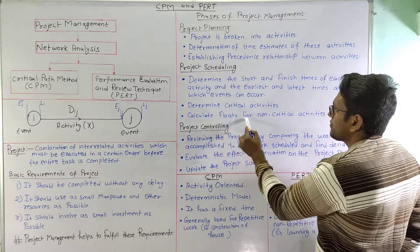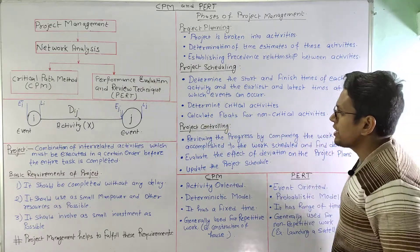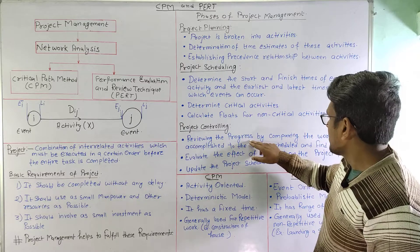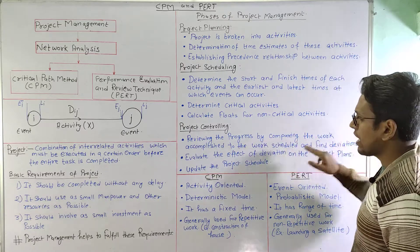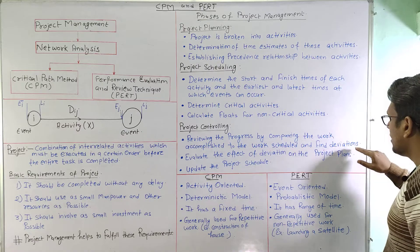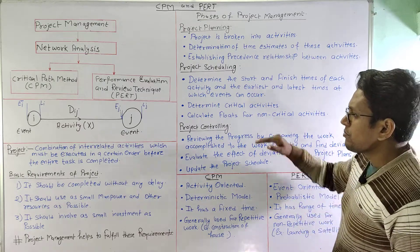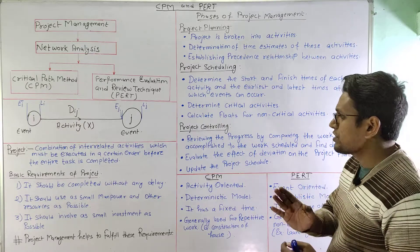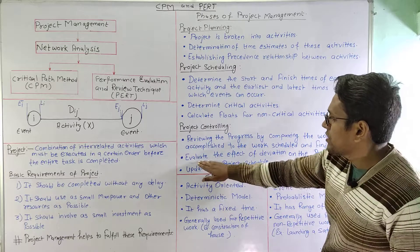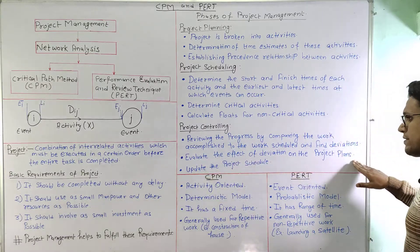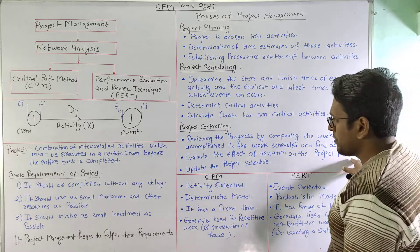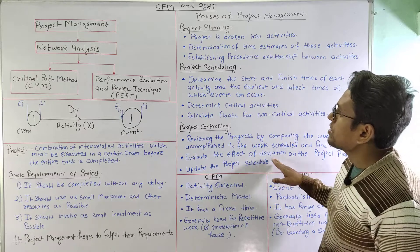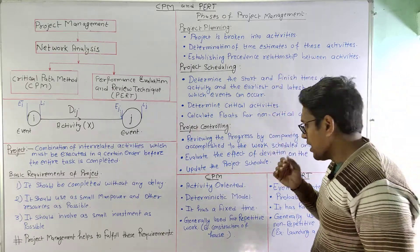Coming to project controlling: we review the actual accomplished work and compare it with the scheduled work to find out deviations. We then evaluate the different aspects of these deviations on the project plans, and finally update the project schedule. These are the three phases of project management.